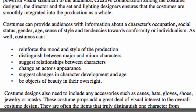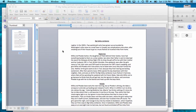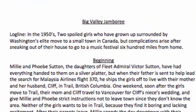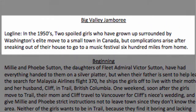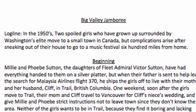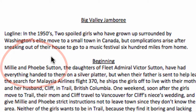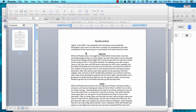So where do we start when designing a costume? We go into the script and the director's treatment. Here I'm working with the following treatment, where one of my costumes will come from. This is the logline: in the 1950s, two spoiled girls who have grown up surrounded by Washington's elite move to a small town in Canada, but complications arise after sneaking out of their house to go to a music festival 600 miles from home. Millie and Phoebe are our characters' names. Now I know who they are, where they live, and the time period that I'm working in.